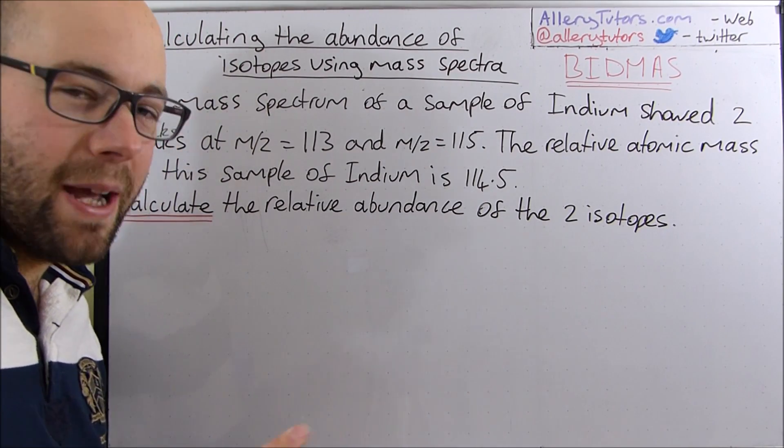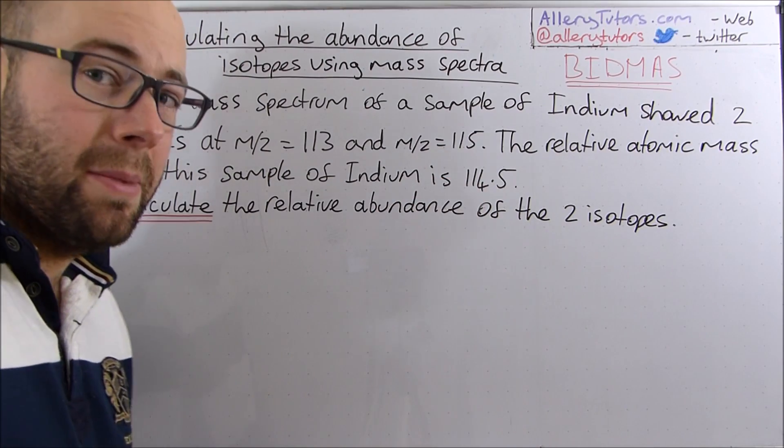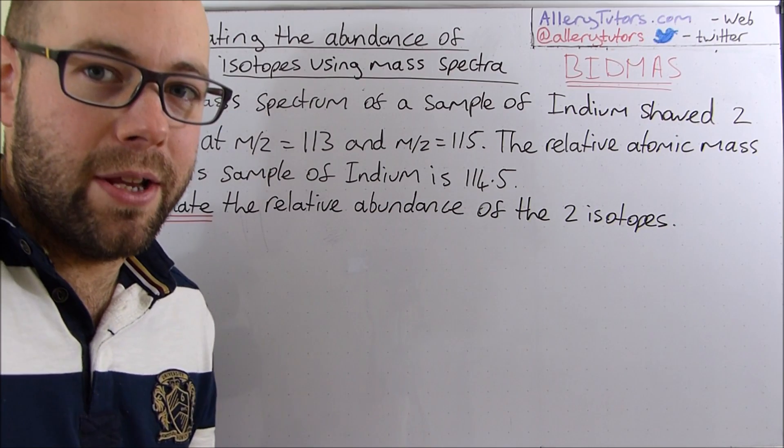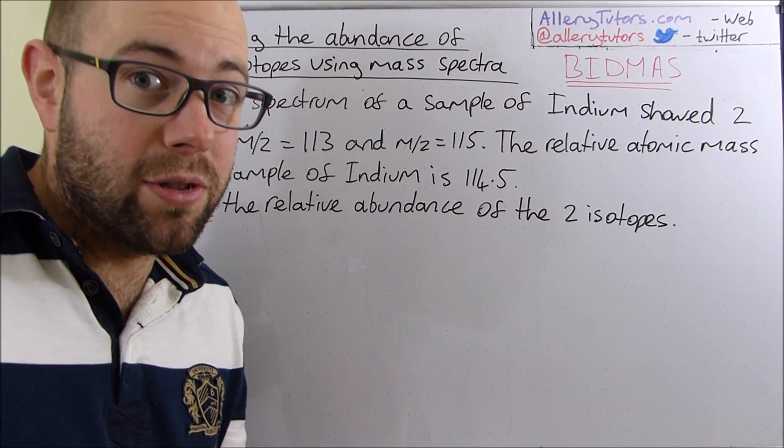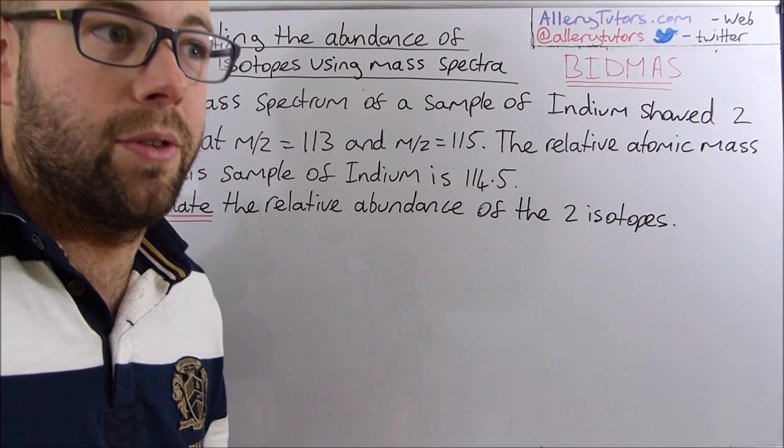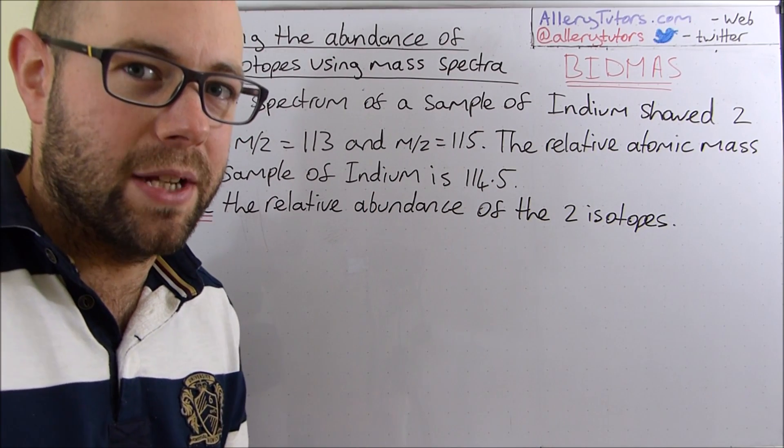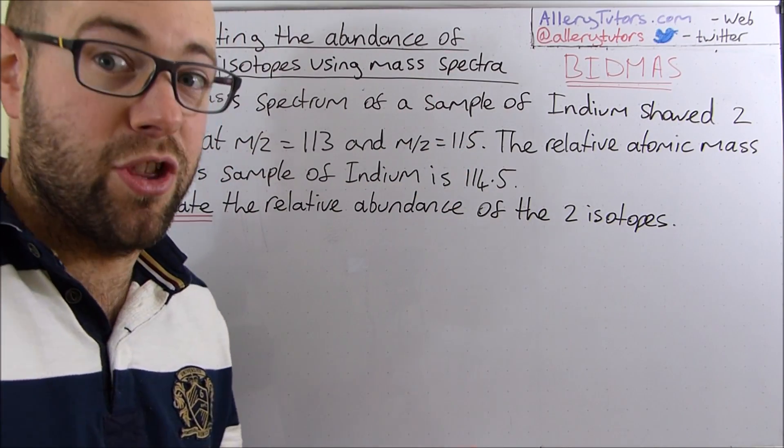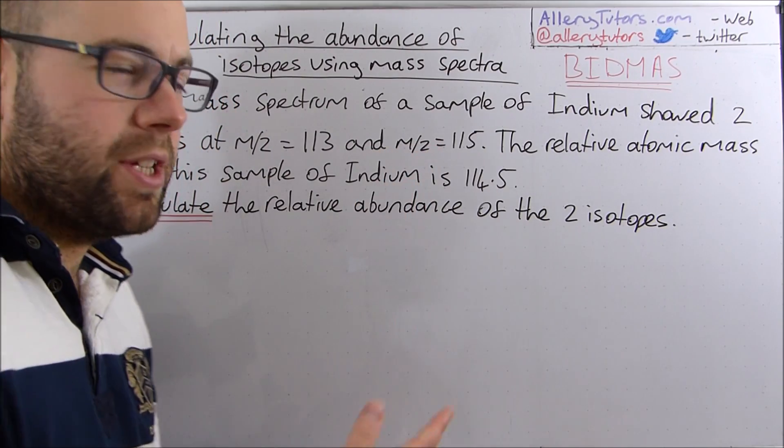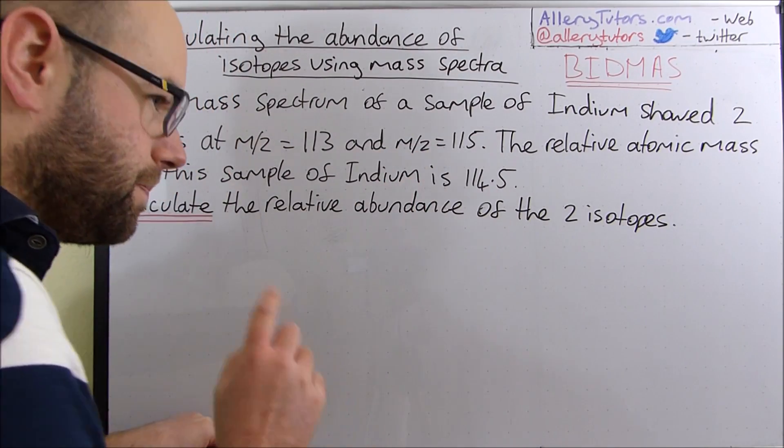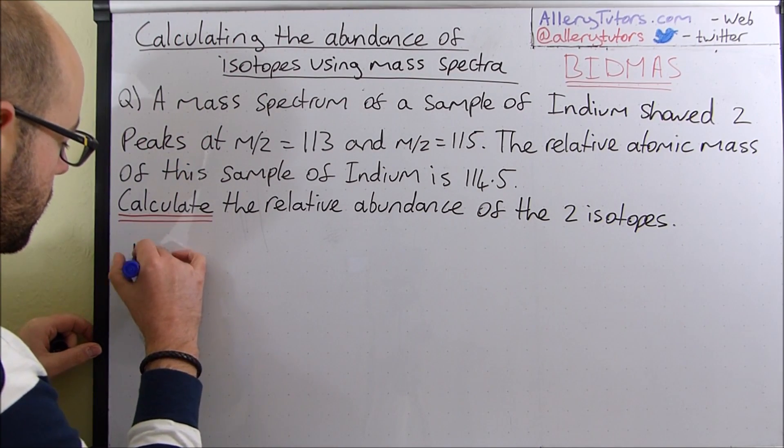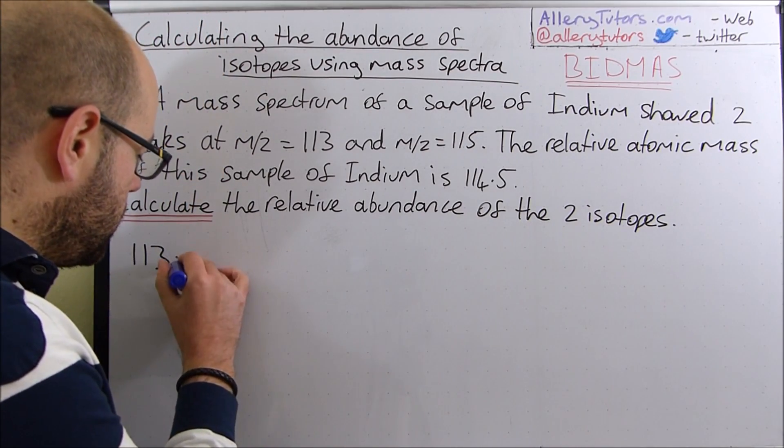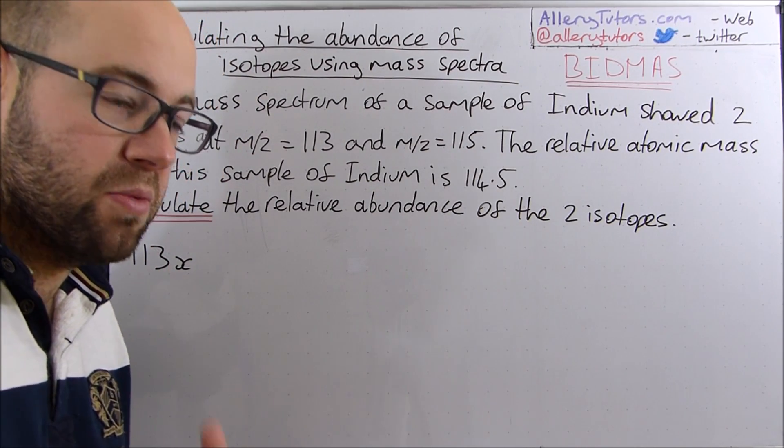What we're going to do is come up with this formula. Remember the formula to work out the relative atomic mass from its isotopes is literally the MZ of the number, for example 115, and you multiply that by the percentage abundance. Most of the time it's percentage abundance because it keeps it easier. But the difference is we don't have that but we're still going to use the same formula. We're going to do 113 first. We don't know what the abundance is so we're going to use the letter X.